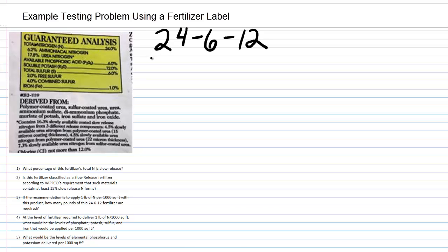We're going to work with a 24-6-12 material. The first question is: what percentage of this fertilizer's total nitrogen is slow release? It's 24% nitrogen by weight — that's part of its guaranteed analysis. Underneath that, we see the nitrogen split into two categories: 6.2% ammoniacal nitrogen and 17.8% urea nitrogen. The urea nitrogen has a small asterisk, so we need to read more on this label to learn what that means.